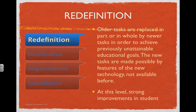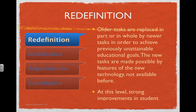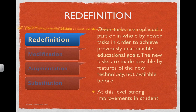The final stage is redefinition. Redefinition is not somewhere we spend a lot of time — it's a place we visit from time to time. Our best lessons and biggest ideas often live in the world of redefinition. In redefinition, older tasks are replaced in part or in whole by newly designed tasks because you're trying to do something you could never do before. You've completely redefined how you teach and how students demonstrate learning because of what the technology allows. There are stronger improvements in student learning at this level, but it's difficult to maintain all the time because it constantly forces you to innovate.